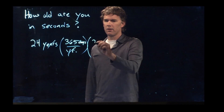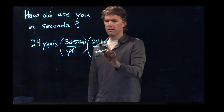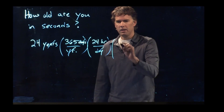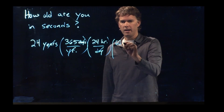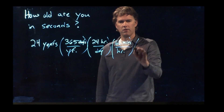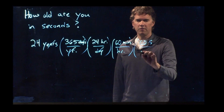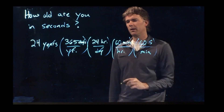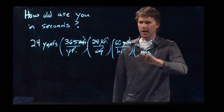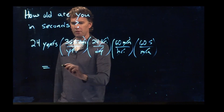How many hours are in a day? There are of course 24 hours in a day, so we get rid of days. How many minutes are in an hour? There are 60 minutes in an hour. And how many seconds in a minute? There are 60 seconds in a minute. So we get rid of hours, we get rid of minutes, and we end up with seconds.